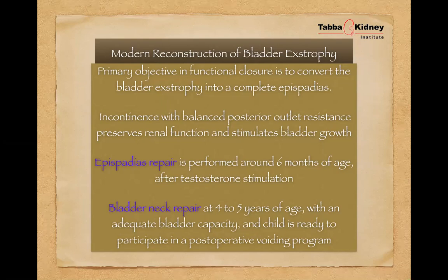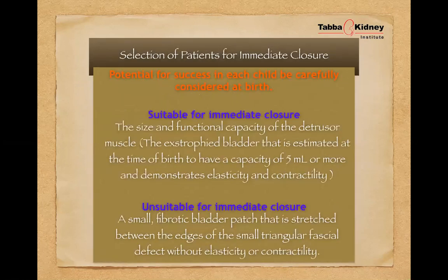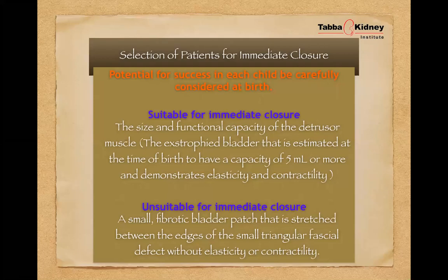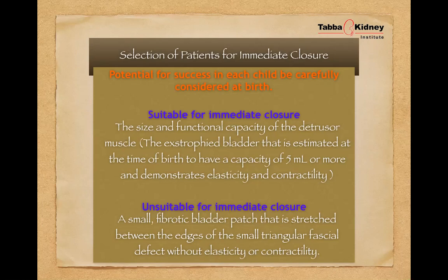The post-reconstruction period is the most vulnerable time for upper tract damage. In neonates where the bladder is about the size of a surgeon's thumb — approximately 5 ml capacity — closure can be done only if the bladder is robust, elastic, and pliable. If it is not, one should not attempt bladder closure as it will fail badly, potentially damaging the upper tract. Re-closure is difficult, and careful patient selection is essential. Osteotomies approximate the pubic diastasis, bringing the pubic bones and muscles closer together, facilitating better closure.